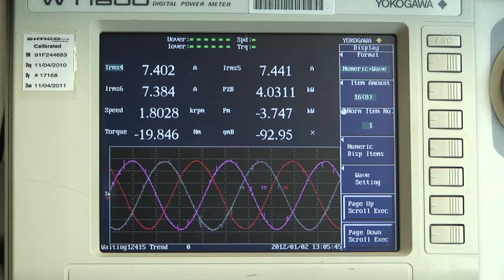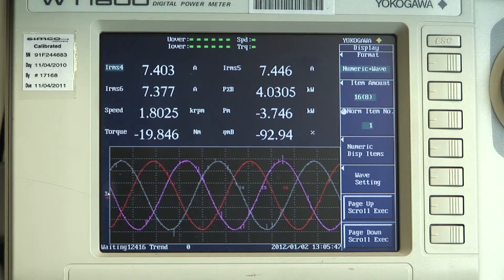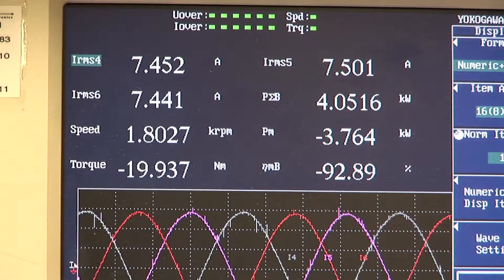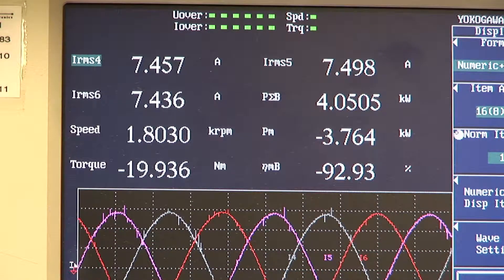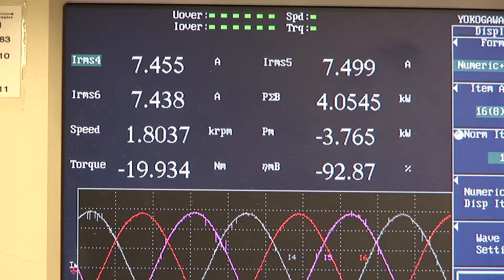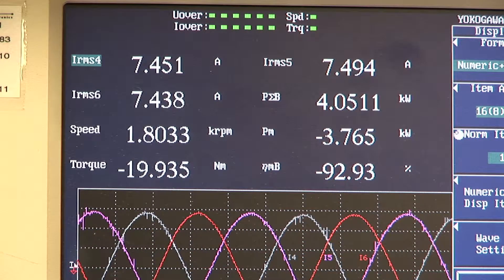At the motor's rated 5 horsepower operating point at a speed of 1800 rpm and 20 Newton meters of torque, we see that the premium plus motor's efficiency is almost 93 percent.